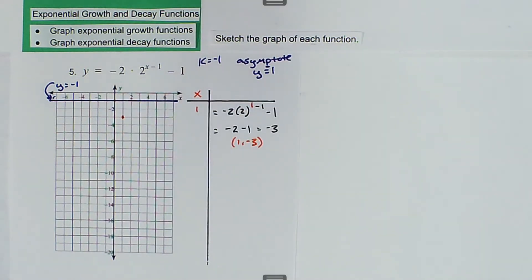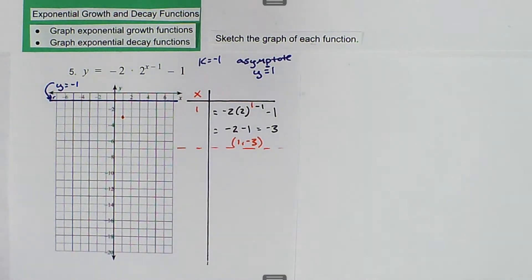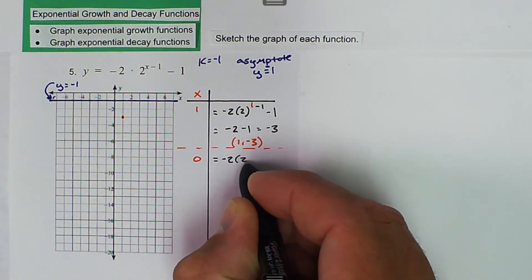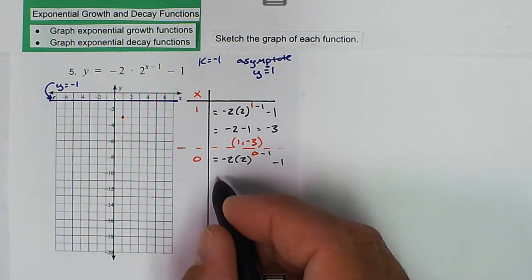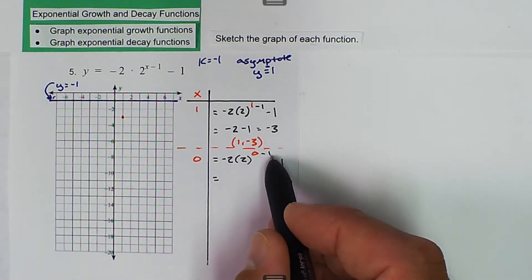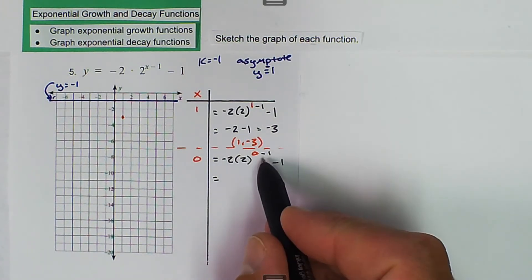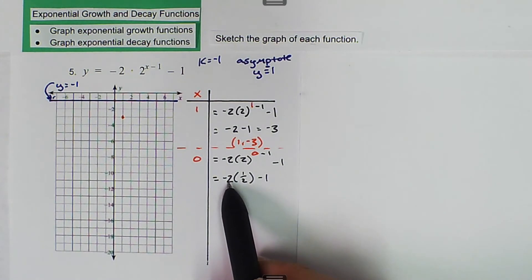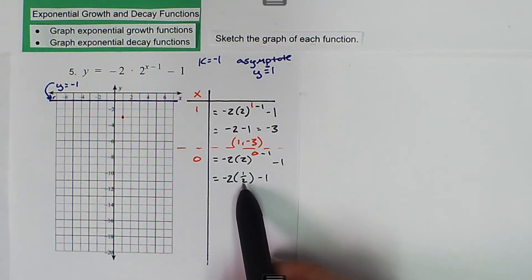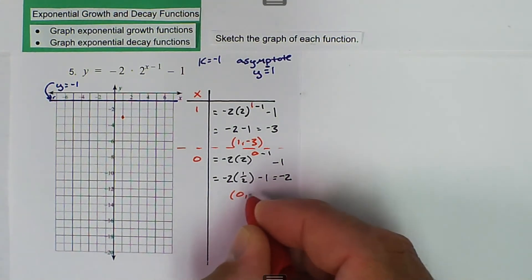Then we can take a look at another example and try x equals 0. That'll give us a negative exponent, and that usually helps out a little bit. So we get negative 2 times 2 raised to the 0 minus 1, minus 1. So 0 minus 1 is negative 1, and 2 to the negative 1 gives us one half. So we get negative 2 times one half minus 1, which is negative 1 minus 1, equal to negative 2. So we get the ordered pair (0, -2).